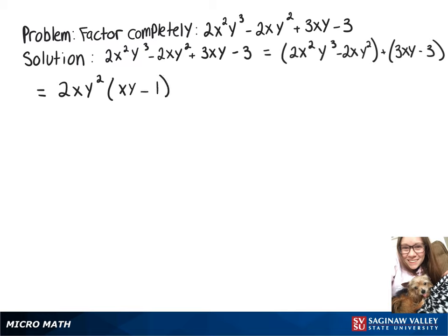In our second group, we can take out a 3, and when we do that, we're left with xy minus 1. Now we're going to factor out that xy minus 1, and we'll have that times 2xy squared plus 3.